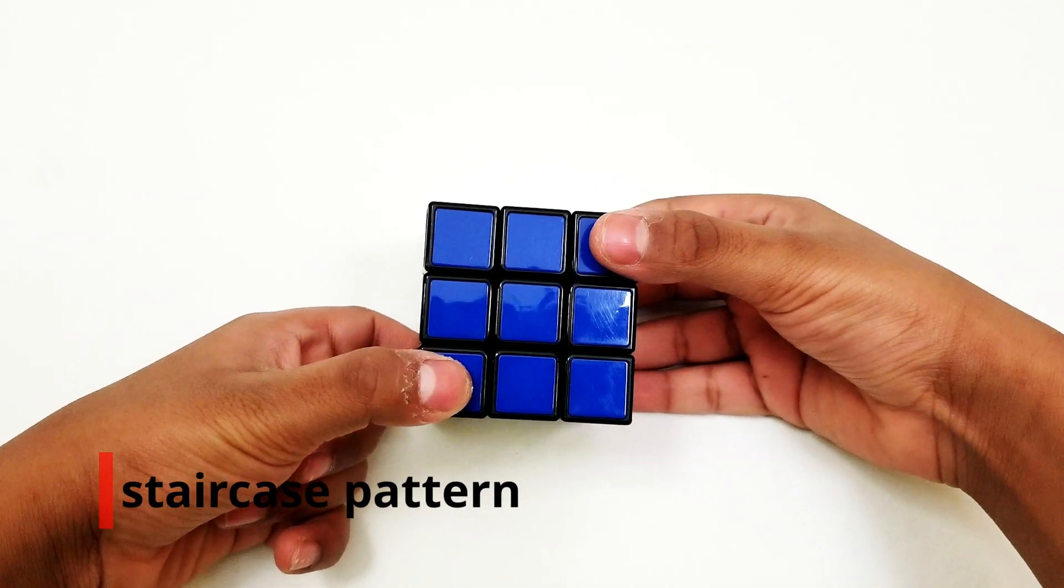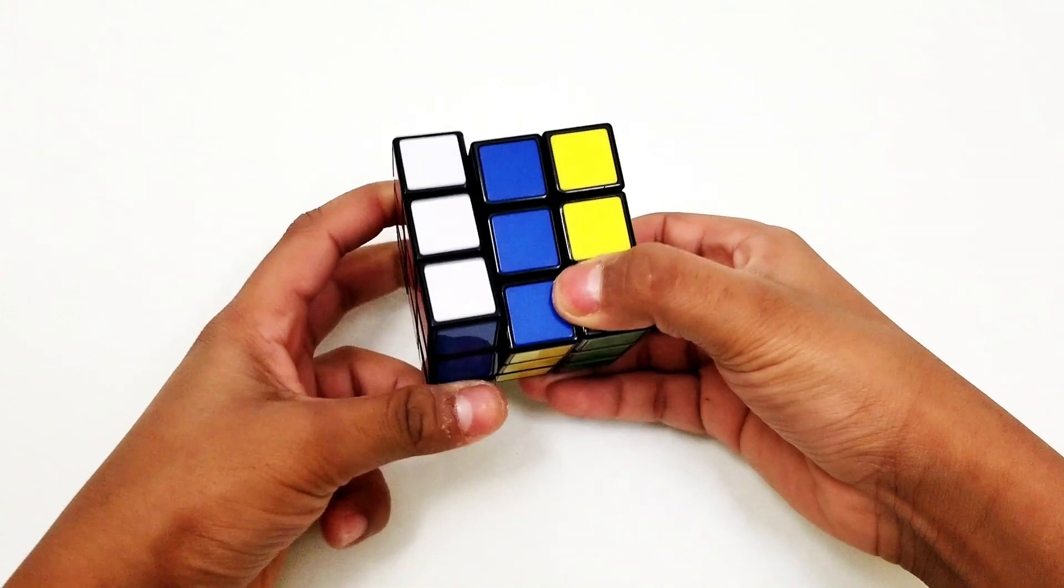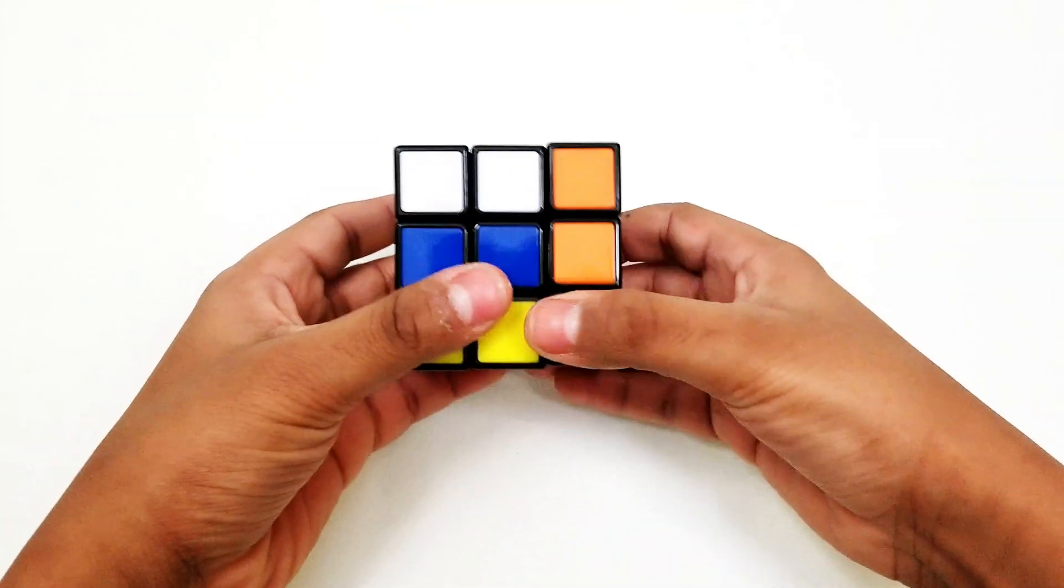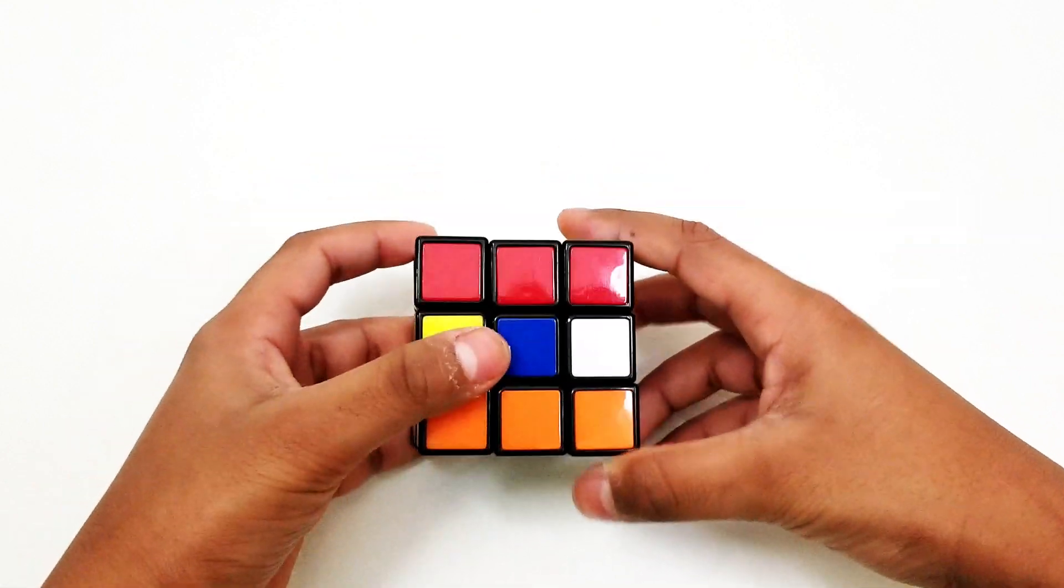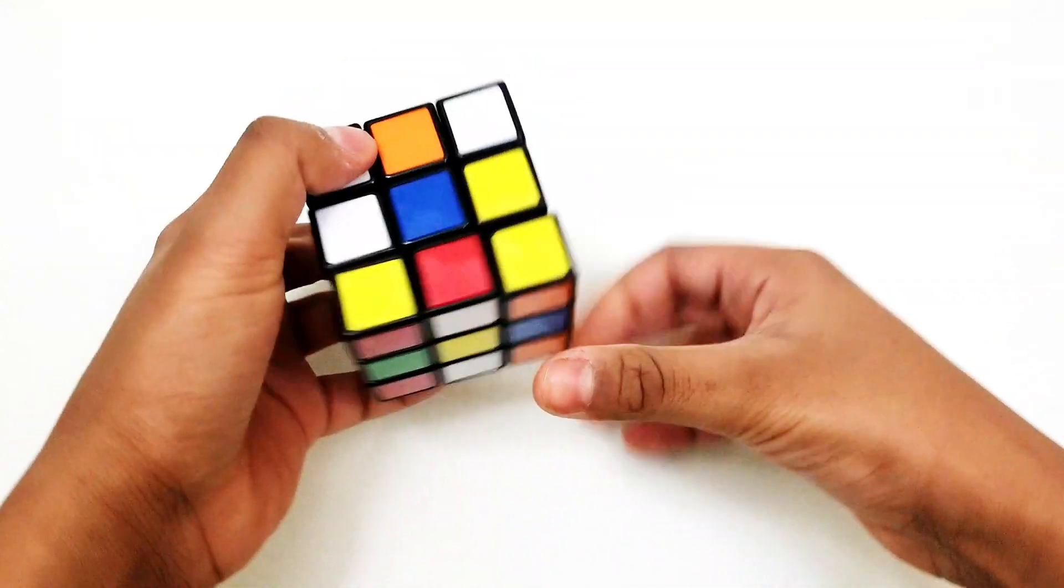Hold your cube like this and lift the right and lower the left, then turn. Lift the right and lower the left, then turn. Lift the right and lower the left until your cube's face becomes the same color as you started.